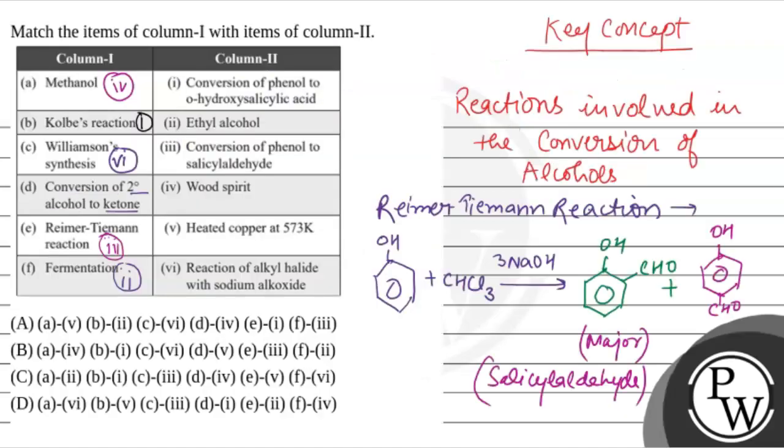So it means D will be heated copper at 573K. It is 5.